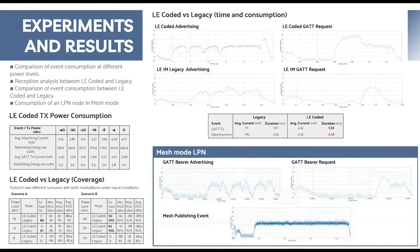In the case of the CODED modulation, it lasts almost twice as long as in the legacy version, lasting more than 6 milliseconds. Regarding the consumption in mesh mode, a low power node, also known as LPN, was analyzed. The following graphs show a much lower duration than that obtained in the GATT architecture. Despite the fact that the GATT bearer events of the mesh standard were not implemented in CODED, their duration is minimal. Even taking into account the longest time on air, the duration will be less than one millisecond. In the case of mesh publication events, it was implemented with CODED and its duration is approximately half of a millisecond. So in the mesh protocol, communication events are therefore faster and more efficient.